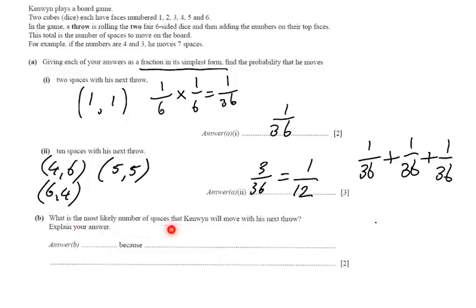What is the most likely number of spaces that Kenwin will move with his next throw? And explain your answer. Now, you should realize, whenever you play a game like this yourself, the biggest chance you have is rolling a 7. And why is that? Because you just have the most possible combinations for a 7.